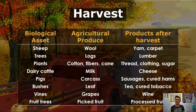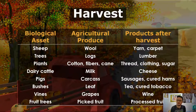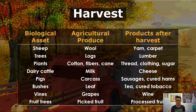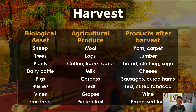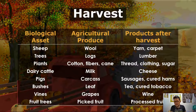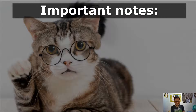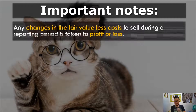Here are a few items of biological assets, their agricultural produce, and the possible products that can result after harvest. You can pause the video anytime to read all of them. For now, let's move ahead to the important notes.